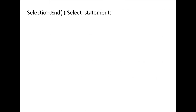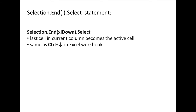This task can be accomplished with the help of the Selection.End.Select statement. This statement moves the active cell to the first cell or last cell in the current row or current column of a data region, depending on what text is placed inside the parentheses. If XLDown is placed inside the parentheses, the active cell will move to the last cell in the current column of the data region. This statement acts like the Ctrl+Down Arrow shortcut in the Excel workbook environment.